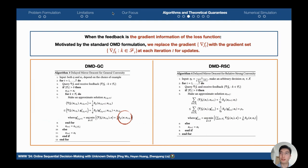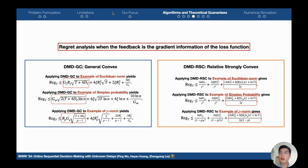When the feedback is the gradient information, motivated by the standard online mirror descent, we replace the gradient of the current loss functions with the gradient of the received loss functions. Our proposed delayed mirror descent can achieve the same order of regret with the follow-the-leader based algorithm.